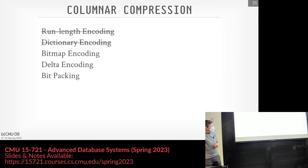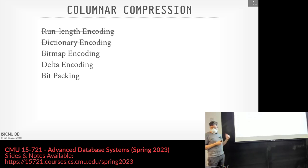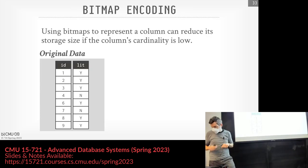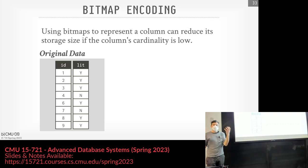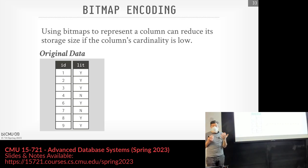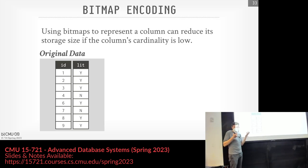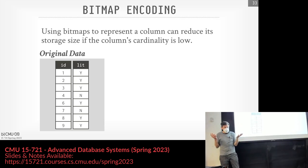We've gotten through run-length encoding and dictionary coding. Now we'll talk about bitmap encoding and compressing the bitmaps we talked about last class. Last class was about using bitmaps as auxiliary data structures for indexes, but as the paper you read, you could actually store the column itself natively as a bitmap, which actually compresses it — assuming the cardinality is low enough.